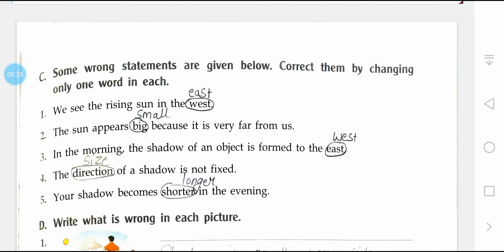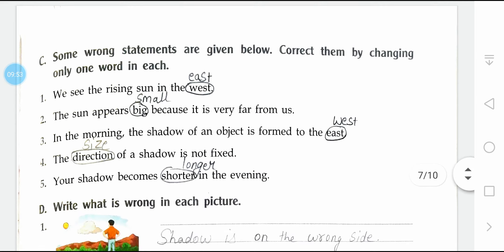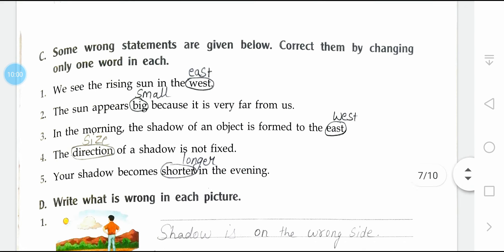Now some wrong statements are given — correct them by changing only one word in each sentence. We see the rising sun in the east. The sun appears small because it is very far from us. In the morning the shadow of an object is formed to the west. The size of a shadow is not fixed. Your shadow becomes longer in the evening. जो words मैंने circle किये हैं वो गलत हैं — उन्हें change करके pencil से correct words लिखे हैं, आप भी लिख लेना.